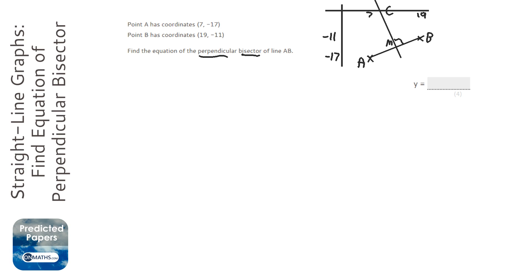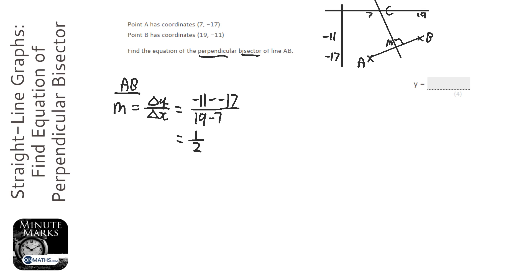So, for line AB, the gradient is going to be change in y over change in x. So, the change in y is minus 11, take away minus 17, and the change in x is 19, take away 7. So we've got minus 11, and then effectively plus 17, which is 6, divided by 19, take away 7. 19 take away 7 is obviously 12. So, 6 divided by 12, which is a half. So the gradient of that is going to be a half.